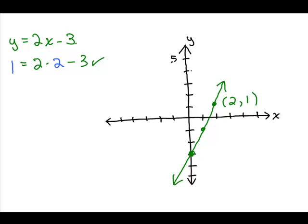It's similar when we work with inequalities. An inequality looks a little bit different — it might be something like y is less than 2x minus 3. It has an inequality symbol, a less than symbol. So let's figure out how we would find the solutions and then graph the solutions to y is less than 2x minus 3.